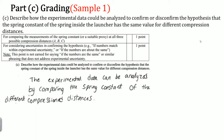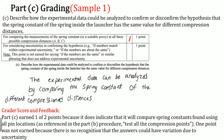In sample one for Part C, the student wrote that the experimental data can be analyzed by comparing the spring constant at different compressed distances. The grader gives them one point for saying the experiment can be analyzed by comparing the spring constant. This is somewhat controversial since the student describes the comparison but doesn't actually perform the analysis, yet the grader still awarded the point.